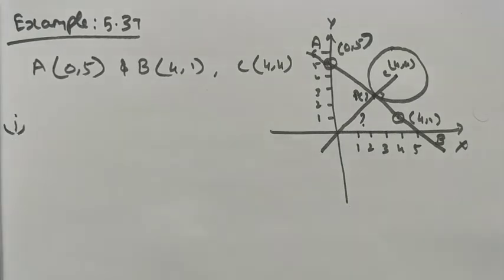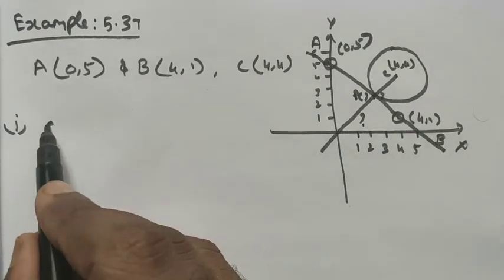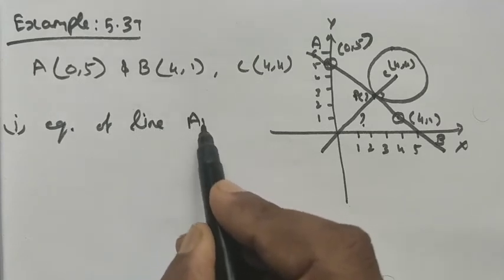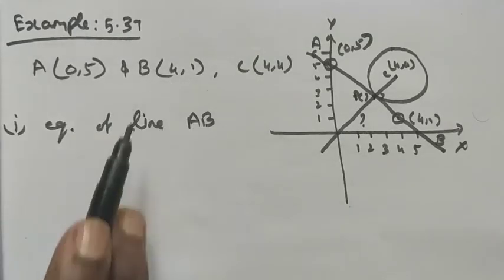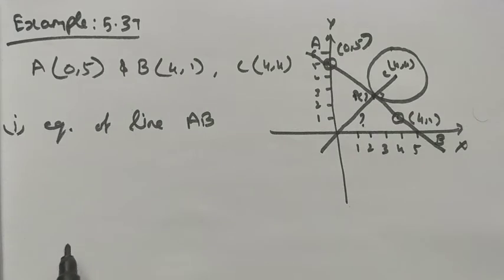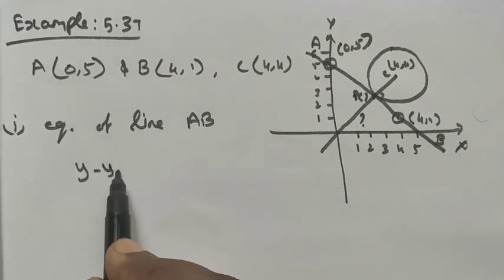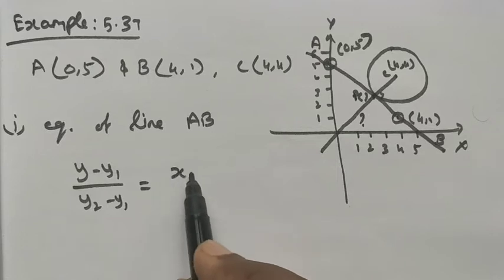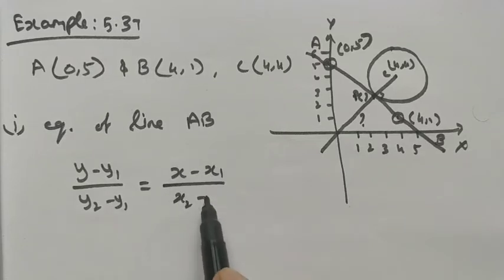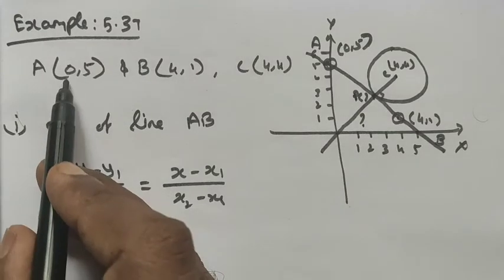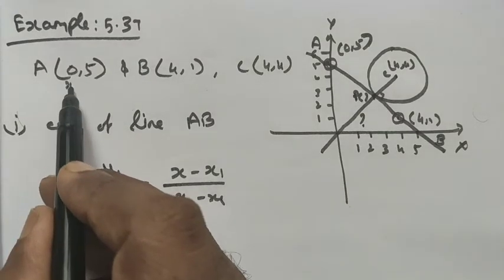First, we want to find the equation of line AB. By using points A and B, we know that when two points are given we use the two-point form. The formula is: (y - y1)/(y2 - y1) = (x - x1)/(x2 - x1). Let A be (x1, y1) and B be (x2, y2).